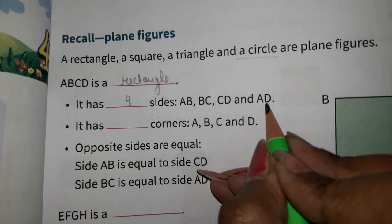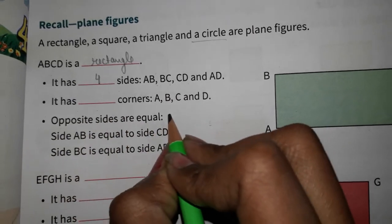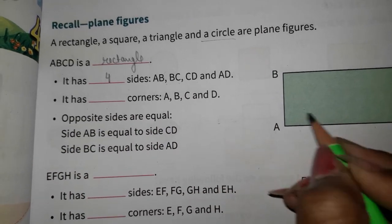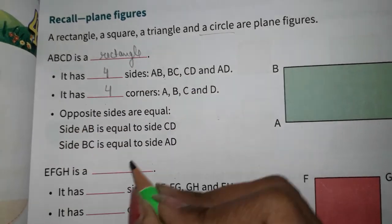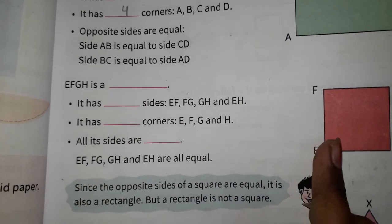A, b, c, d, a, d. It has how many corners are there? Four corners. And opposite sides same.